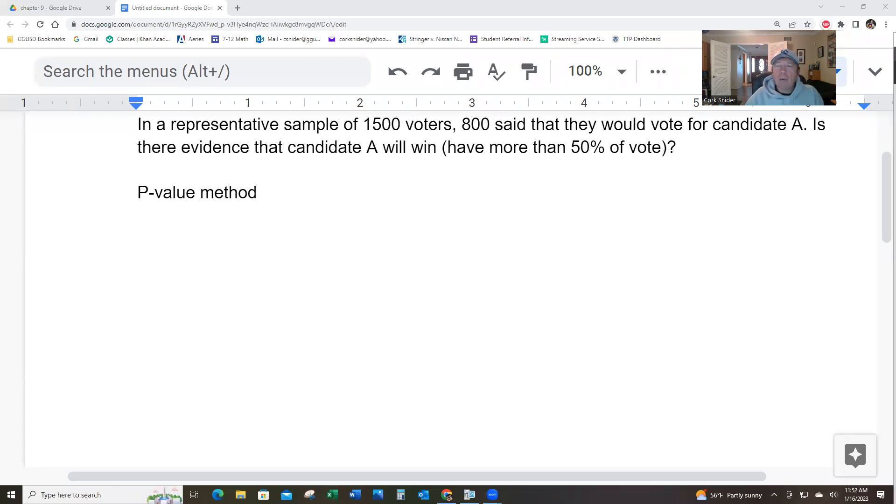So, first of all, 800 divided by 1,500 is about 53%. If you want the P-value method, this is what you're doing. You're drawing a normal curve, and we're going to put 0.5 here, and we're going to put 0.53 here. 0.53 is 800 divided by 1,500.